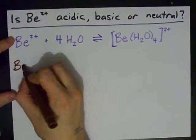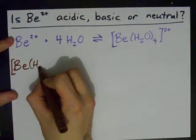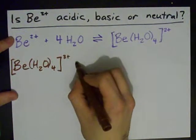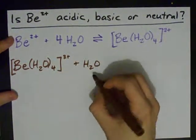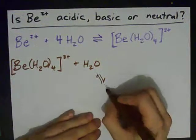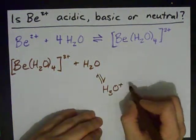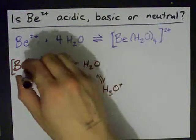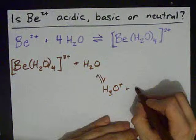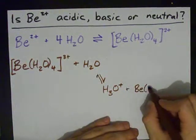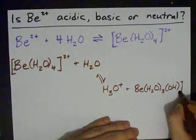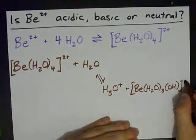Here's another water, a fifth water entering the scene, and it gets a new proton. A proton is donated from this to the water to make H3O+. What it leaves behind is Be(H2O)3(OH)+.